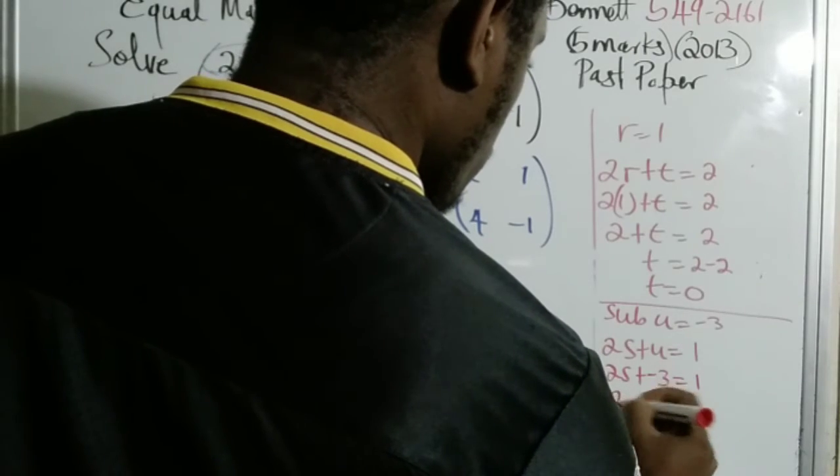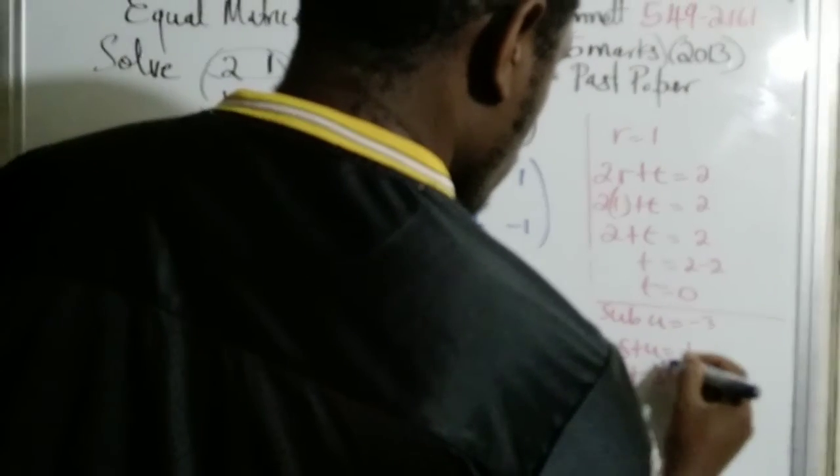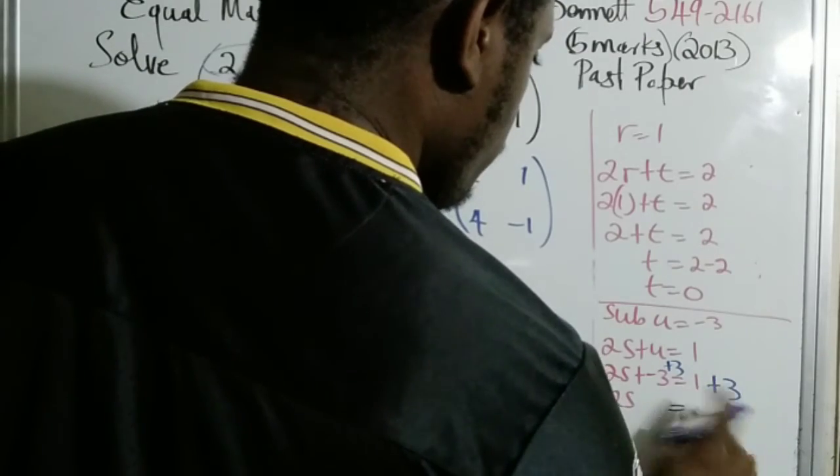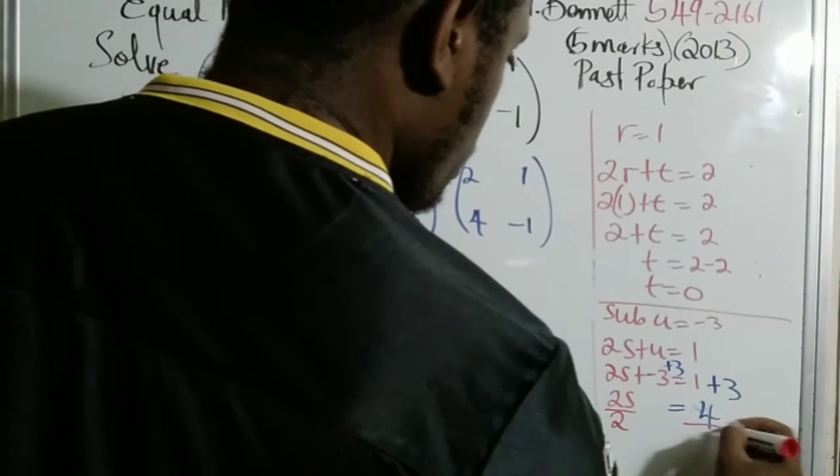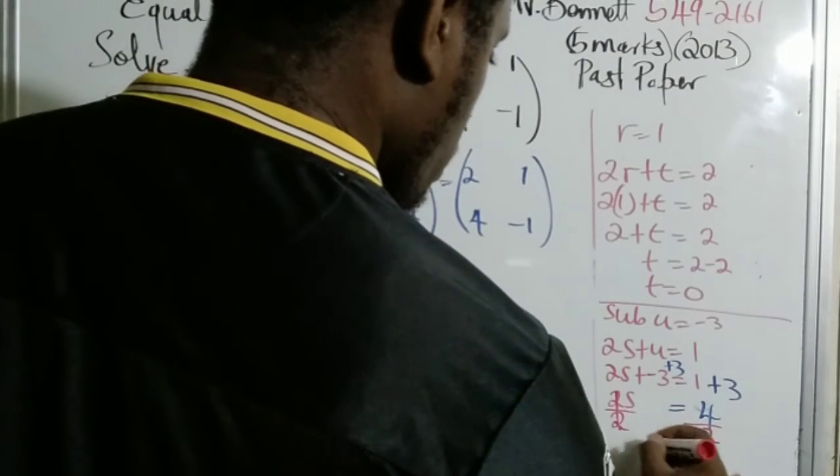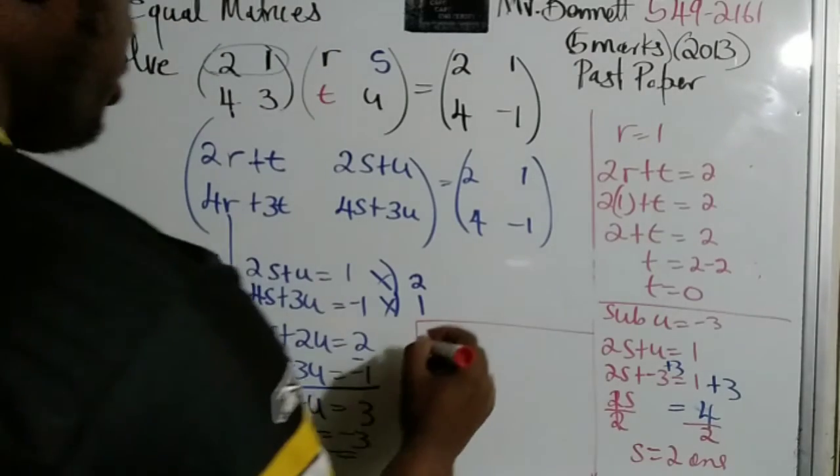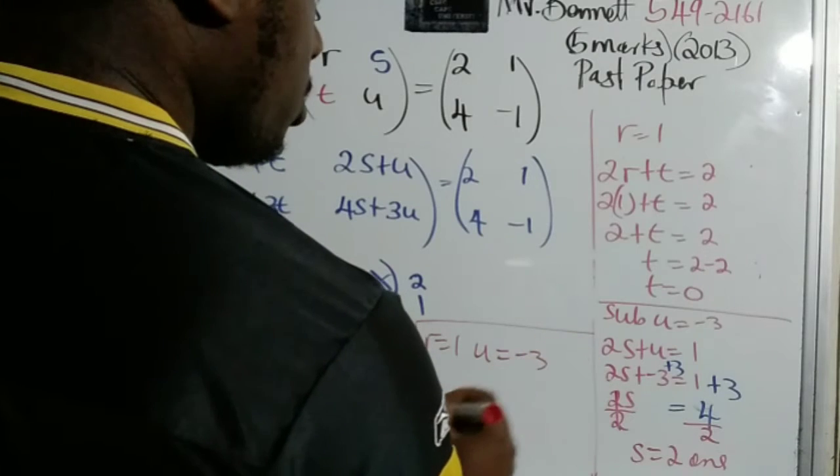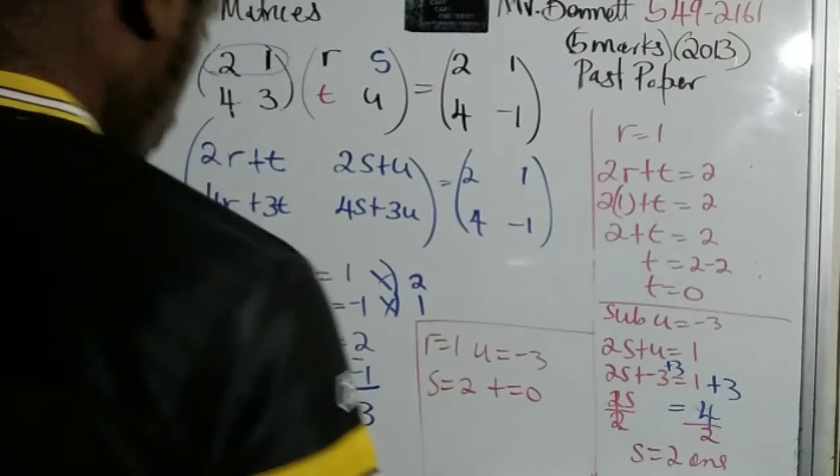So therefore, 2S. Get rid of this negative 3 right here, which is a plus 3. So what we'll do to one side, we'll do to both sides. So we end up with 3 plus 1 is 4. And then we divide by 2. That's 2 times the inverse. So S is equal to 2. So here's your answer. Let us just put all the answers in one place. So R is equal to 1, U is equal to minus 3, S is equal to 2, and T is equal to 0.